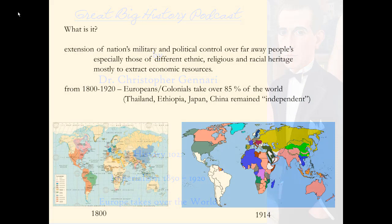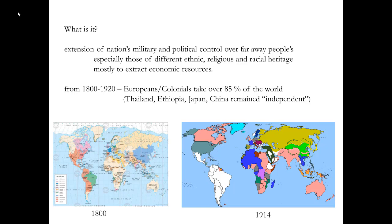Europe takes over the world. So what is imperialism? It's an extension of a nation's military and political control over faraway peoples, especially those of different ethnic, religious, and racial heritages, mostly to extract economic resources. Imperialism is not colonialism or colonization where Europeans would move to another place. This is the taking over of people and extracting their resources, but very few Europeans will move to any of these places.